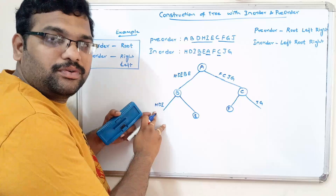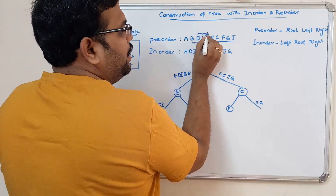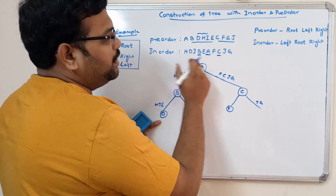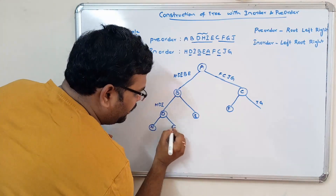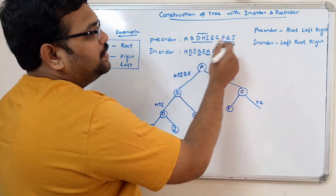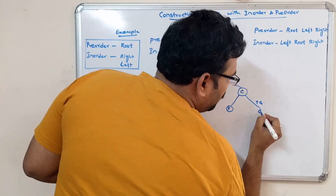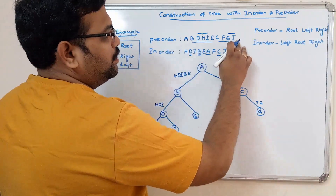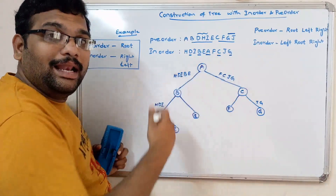In the sub-tree H, D, I, we again find the root using pre-order: H, D, I — so D is the root node. From the in-order traversal, D has H on the left and I on the right. For J and G, from pre-order the order is G then J — so G is the root. From in-order, J is on the left side of G.